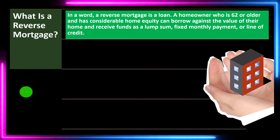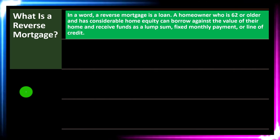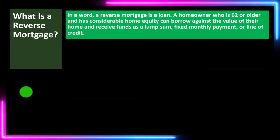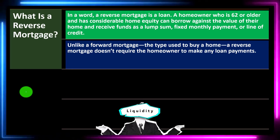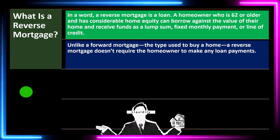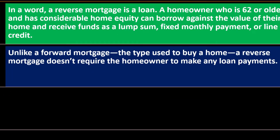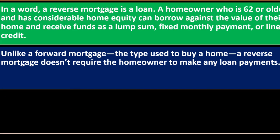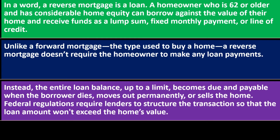But a lot of those assets could be tied up and non-liquid because they're in the home. We would like to have some kind of steady income stream. The equity of the home is the difference between the loan value and the market value. Unlike a forward mortgage used to buy a home, a reverse mortgage doesn't require the homeowner to make any loan payments. Instead, the entire loan balance becomes due and payable when the borrower dies, moves out permanently, or sells the home.